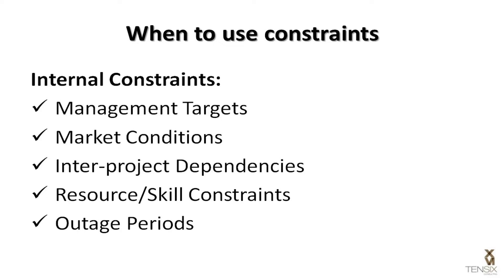Outage periods are common constraints found within electrical utility companies. A lot of project schedules can be affected by or dependent upon outage periods when parts of the electrical grid are powered down for repairs. These events frequently feature as hard constraints in many utility company project schedules.